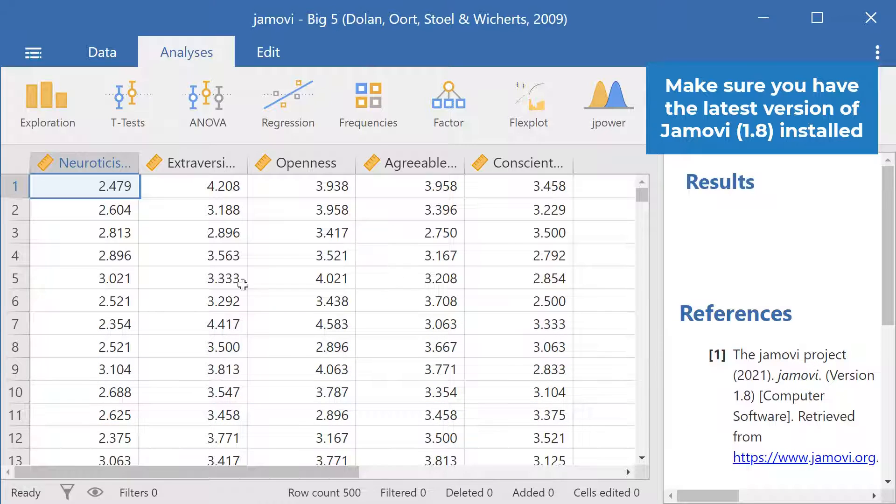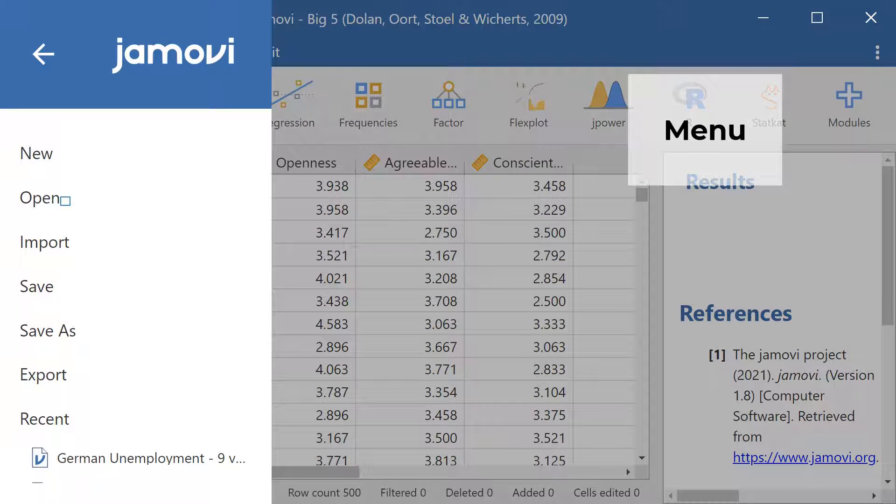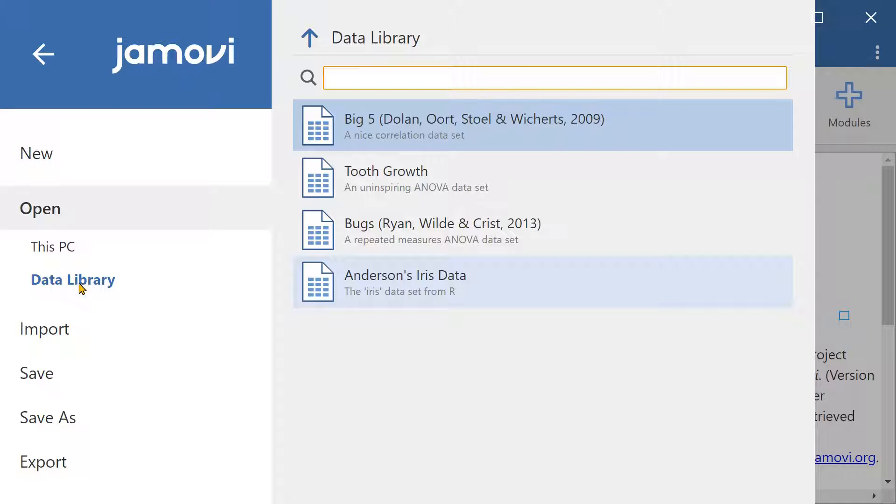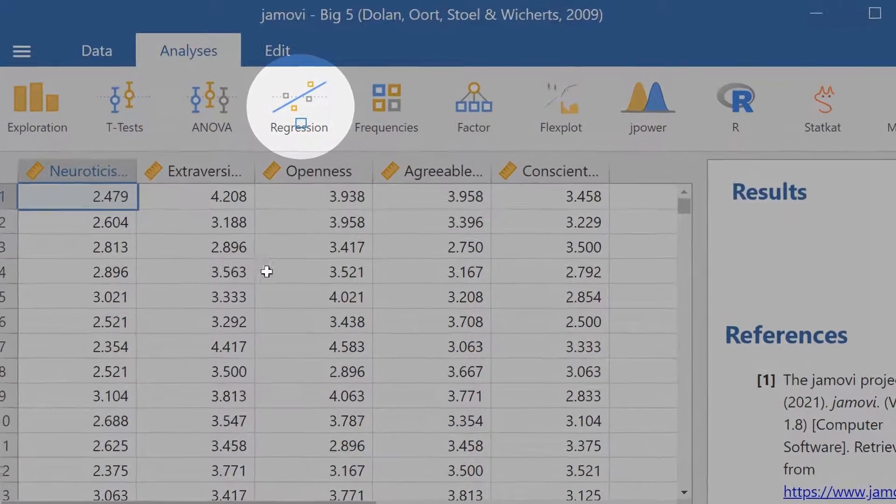I've opened up a built-in data set here in Jamovi. To open this data set, we go to menu and then open. And then in data library, we have four of these built-in data sets.